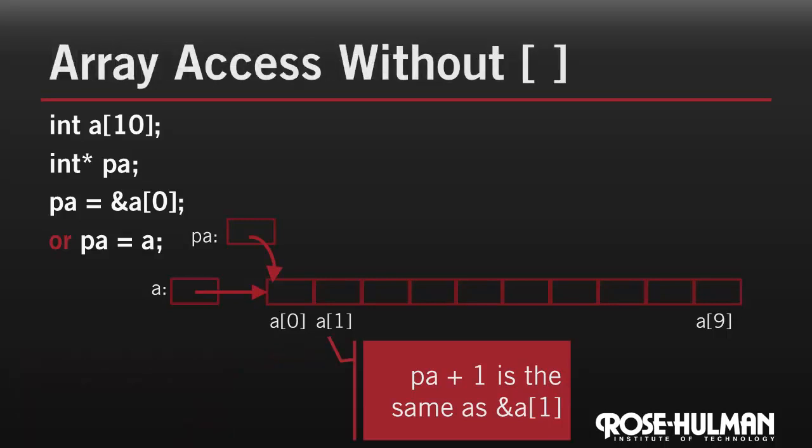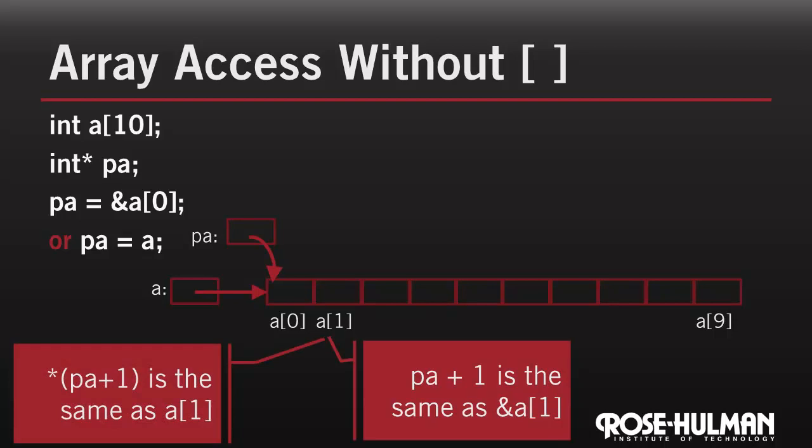Now how do we get the data stored there? Well, we just dereference the pointer. So star parentheses pa plus 1 is the second element of the array. It's the same as a sub 1. Now looking at the picture, you see that star sub a plus 1 would also work, and that's actually what a sub i means. From the start of the array, you add to move forward i ints in memory, and then you dereference. So it's one addition and one dereference to do array subscripting.